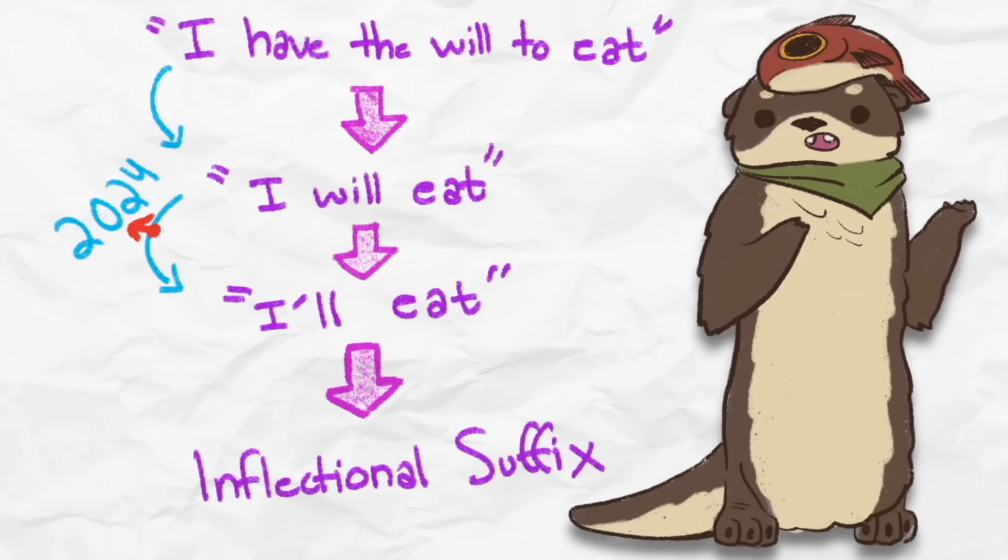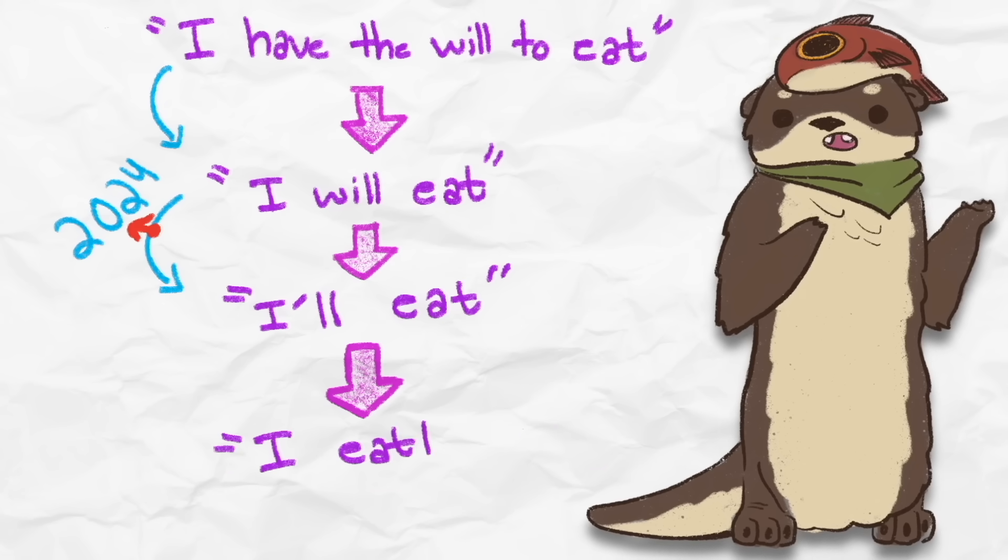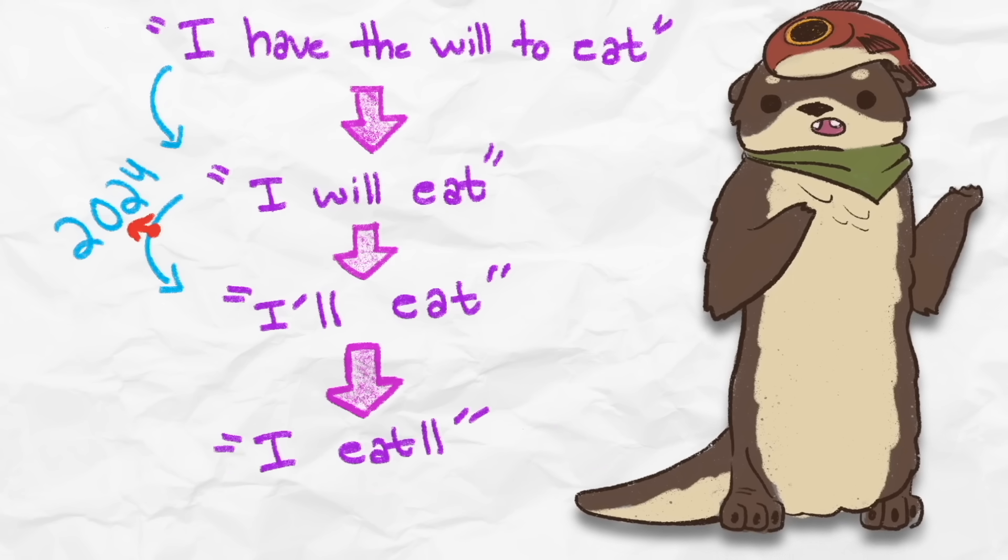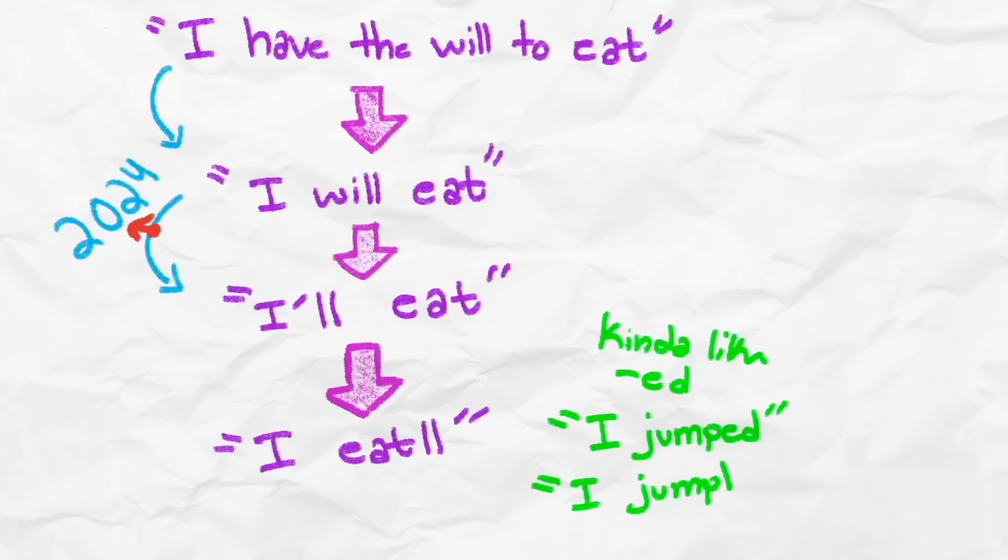Well, according to the decline of grammaticality, the final step is for a clitic to become an inflectional suffix. Theoretically, the clitic can start attaching to the verb itself, so rather than I'll need your help, we might say I needle your help. Essentially, we would now have a new conjugation ul to indicate future, much like how ed indicates the past tense.